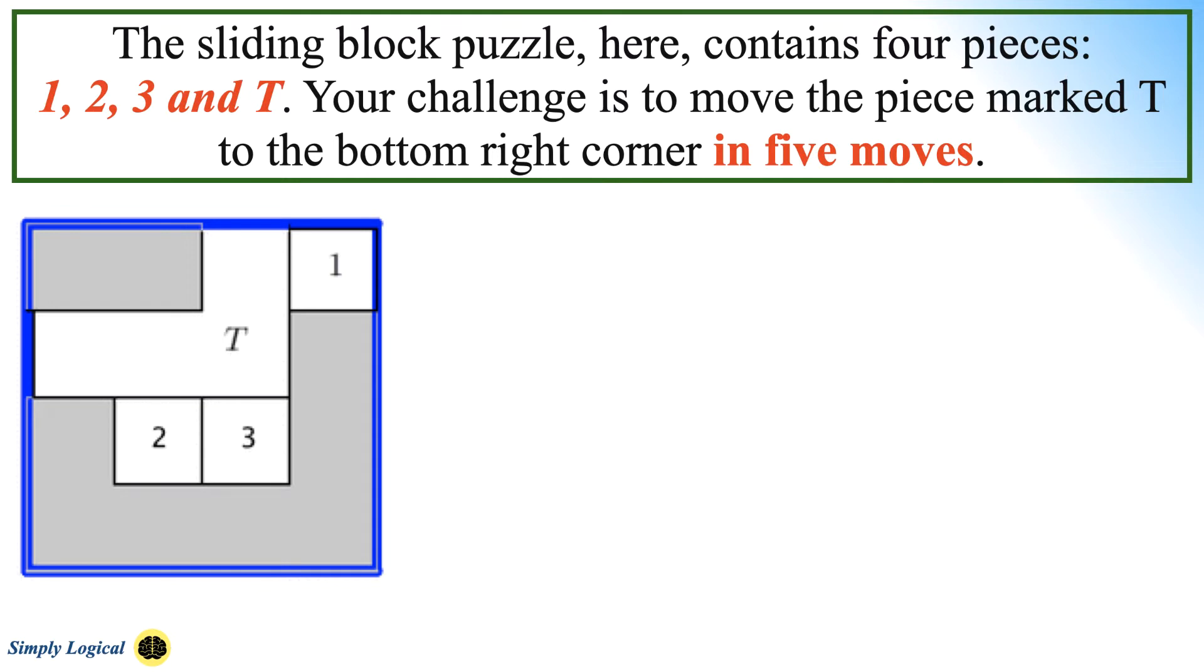I am assuming you know what to do. Pieces are in a grid and you must slide them between each other without picking them up. The sliding block puzzle here contains 4 pieces: 1, 2, 3 and T. Your challenge is to move the piece marked T to the bottom right corner in just 5 moves.